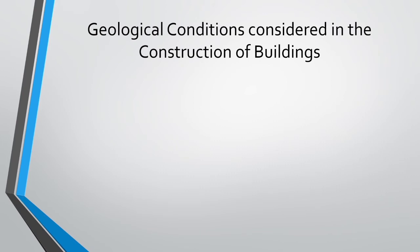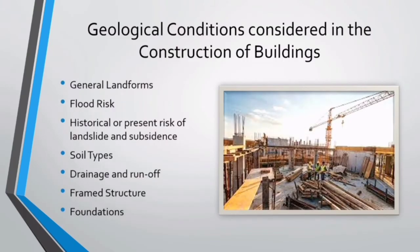The following conditions might be considered in an assessment of ground conditions for the construction of buildings. First is general landforms. Second is flood risk. Next is historical or present risk of landslide and subsidence. Then soil types, drainage and runoff, frame structure, and lastly foundations.